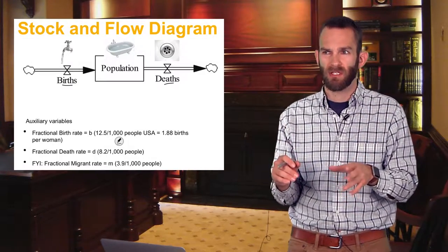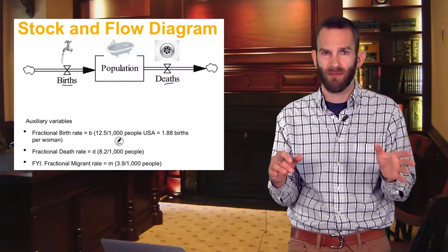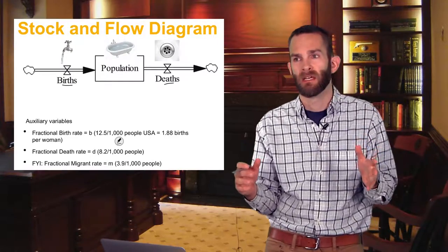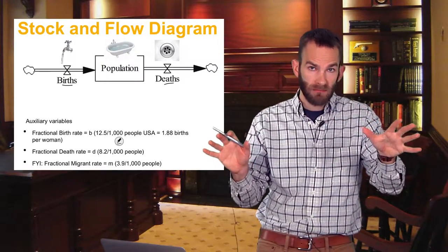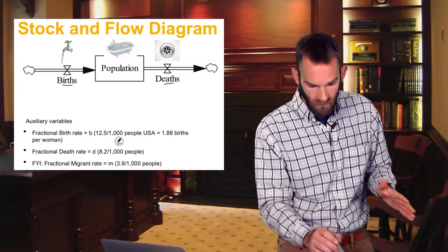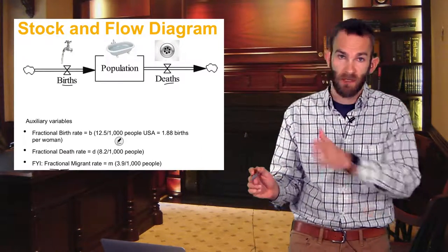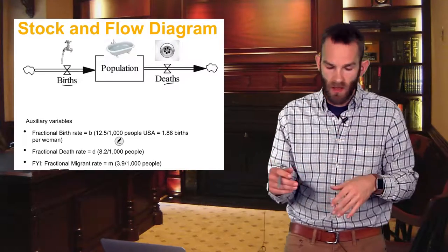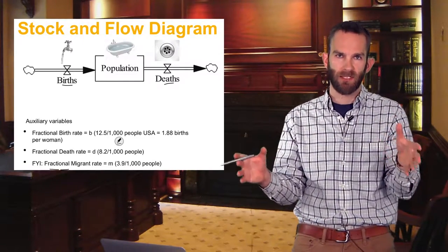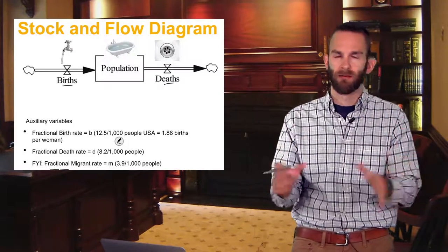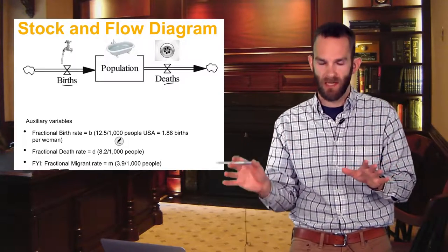But then of course there are other dynamics at play. This is really basic. Like you could talk about economic structures. You could talk about health. You could talk about accidents taking place. So all those are at play. And also I included down here, the migrant rate, which is people coming from other countries into our country. There are so many more variables at play, these auxiliary variables. I understand that we're just going to go with birth rate and death rate.